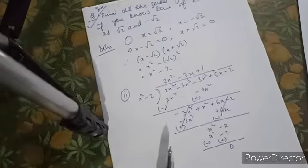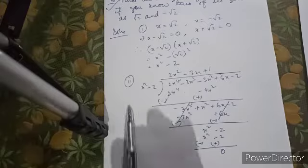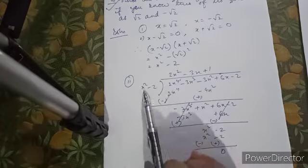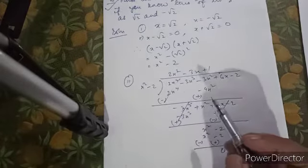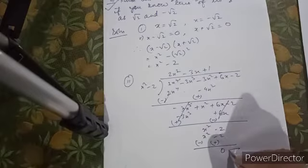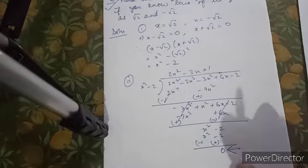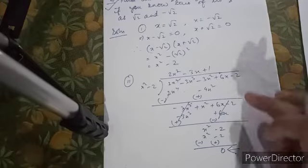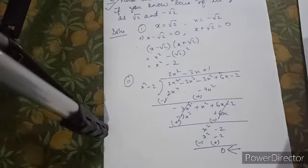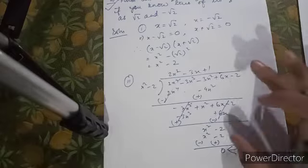You have to divide it. While you divide, one thing to keep in mind: your remainder should always come as 0. If your remainder is not 0, that means you have made a mistake in your division.